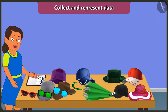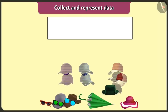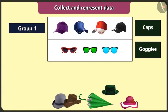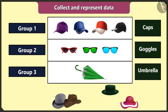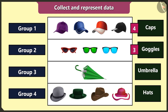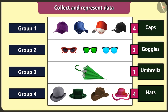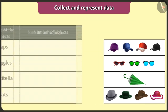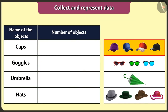As summer season is nearing, I will collect data about the number of caps, goggles, umbrellas, and hats that I have. First I will make groups of similar objects — first group of caps, second group of goggles, third group of umbrellas, and the fourth group of hats. Now I will count the objects in each group. I have four caps, three goggles, one umbrella, and four hats. Now I will create a table and represent all the data in it.